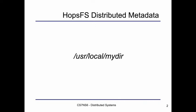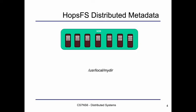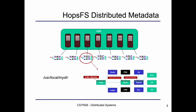Let's see how the metadata of a path is stored in the metadata storage layer. We said that each inode — including files and directories — is represented as a row in the INODES table. Consequently, for each component in a path such as a directory, we have a row in the INODES table. We have multiple NDB servers in the storage layer, and all of these NDB partitions have their own metadata tables, even though the relational model is the same in all shards.